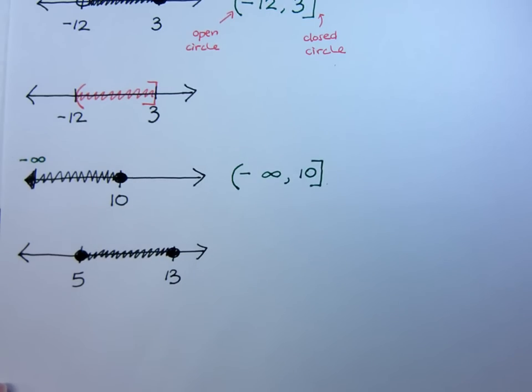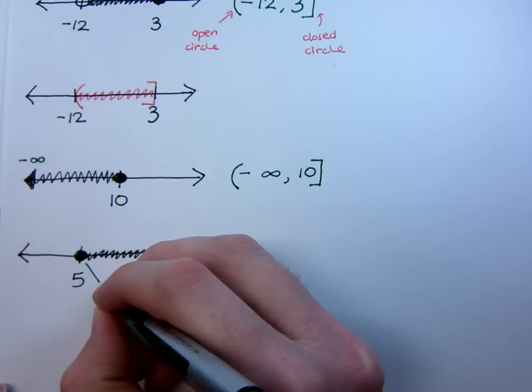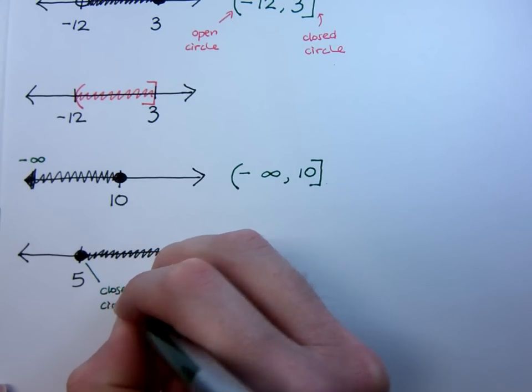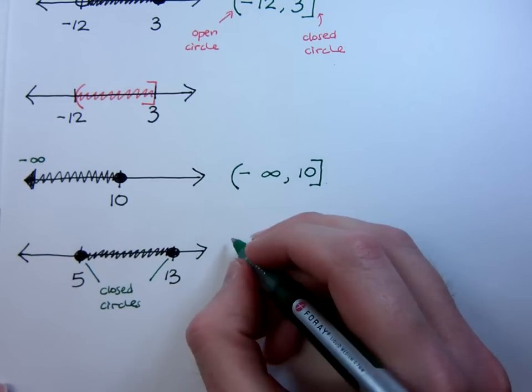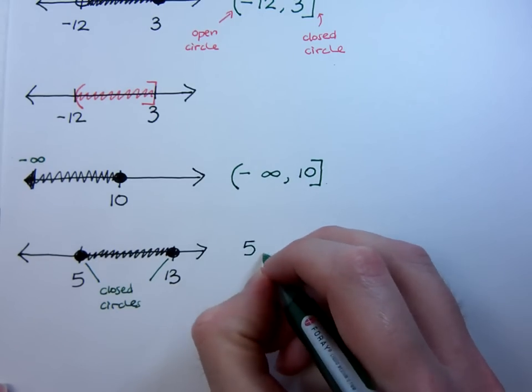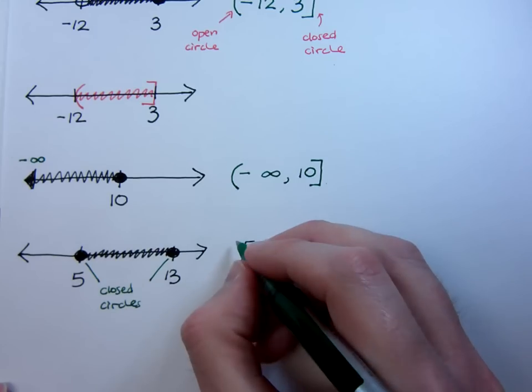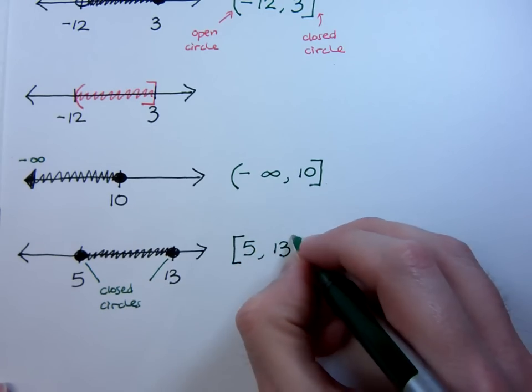Well, since we do have closed circles on both of these guys, both of these guys are closed circles. That means I'm including both 5 and 13 in my solution set. So from 5 to 13, they're both closed circles, they're both included, so I will use a bracket for both of those guys.